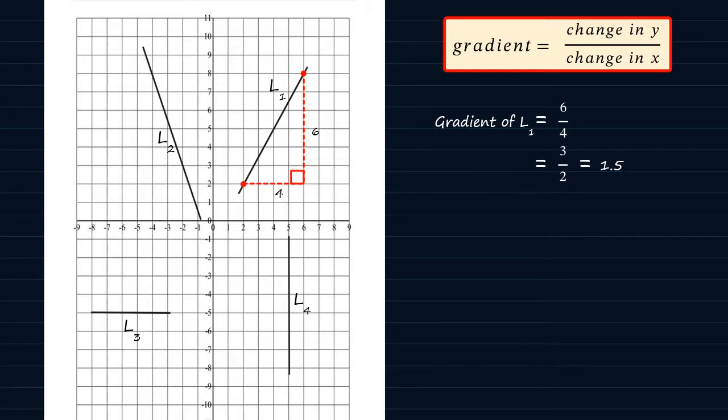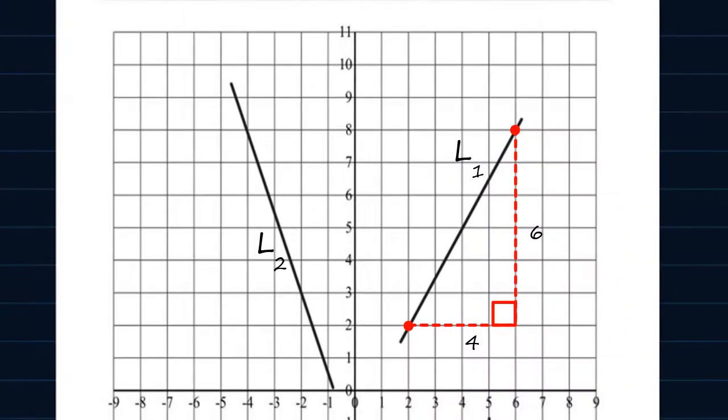Now it's important for you to note that when reading out your horizontal and vertical displacement, you have to start from the line. Now if you start from here, you will have to move to the right, which is a positive displacement, then up, which is again a positive displacement. Hence, overall, the gradient of the line is going to be positive.